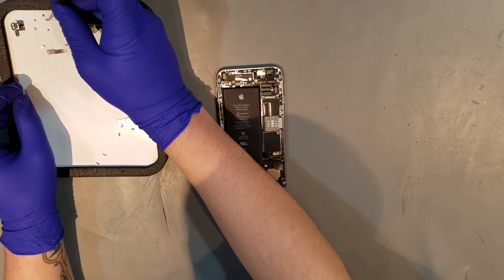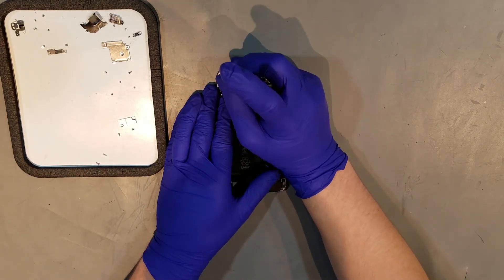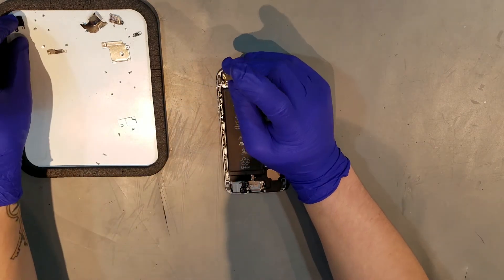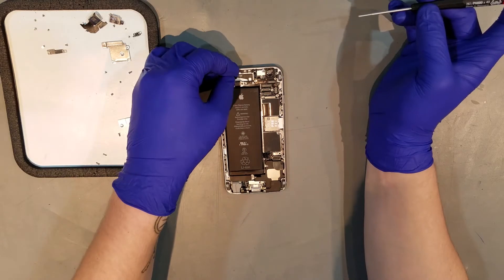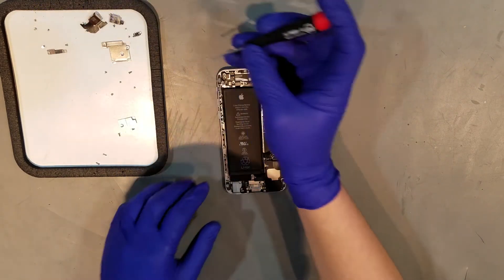The screw that goes directly to the left of the bottom screw for the connector can be replaced as well before laying the GPS module back in. Then the remaining five Phillips screws for this module can be replaced.